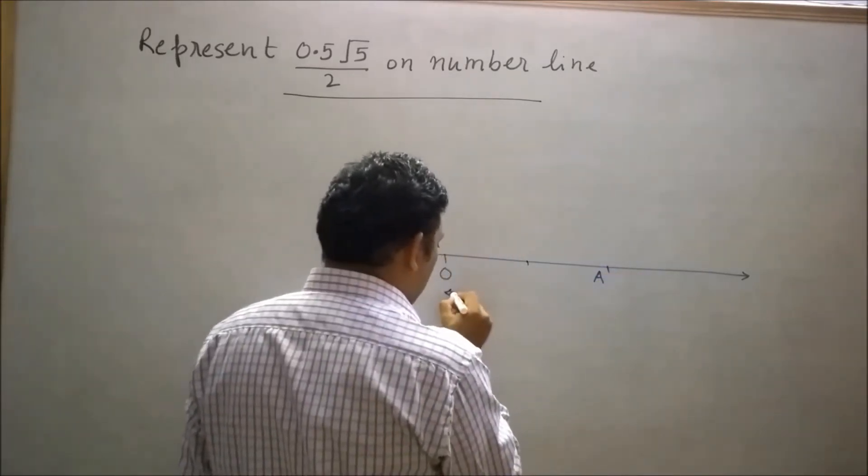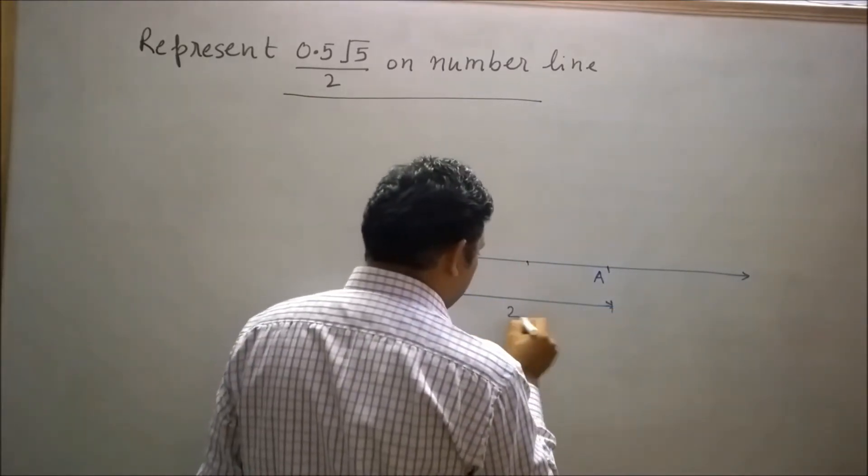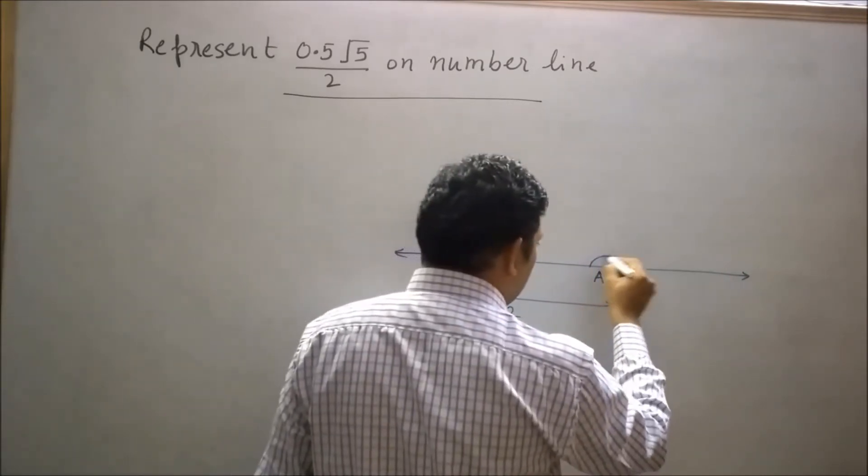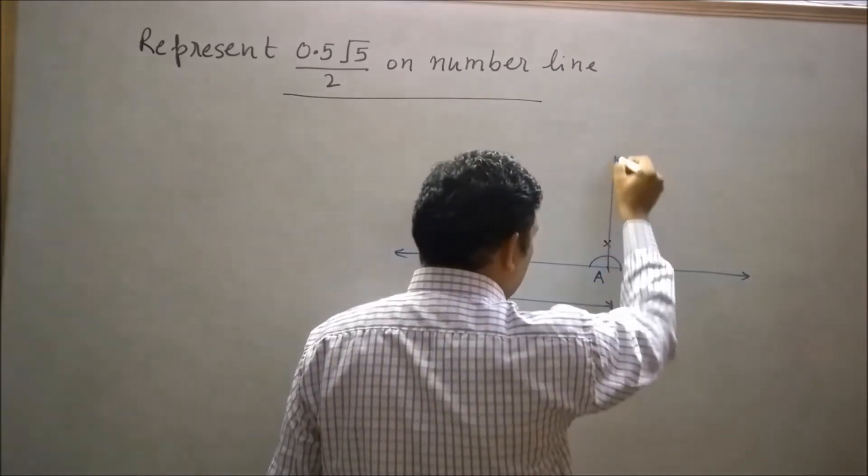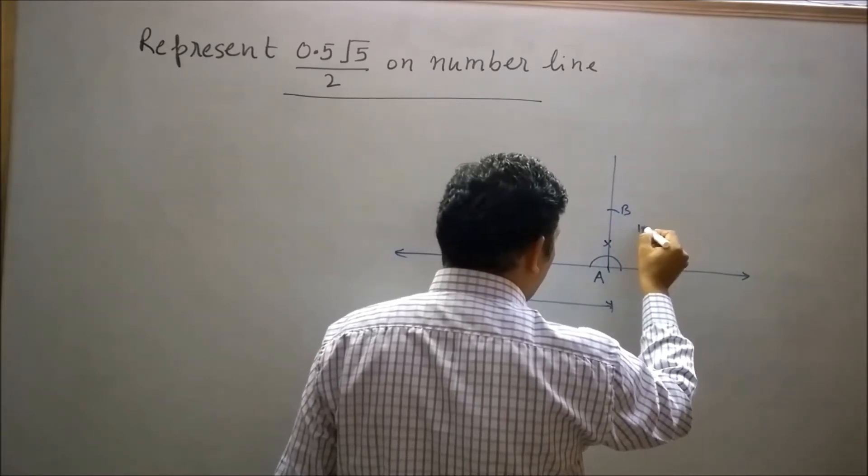Now OA is 2 unit distance. Now draw a perpendicular on OA as AB. Mark this point B, and AB is also 1 unit.